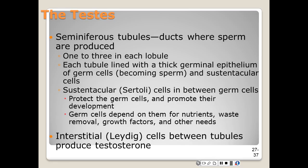The germ cells rely on sustenticular cells — or Sertoli cells — for waste removal, growth factors, and nutrients. The Sertoli cells secrete androgen binding protein and inhibin, both of which regulate the production of sperm.